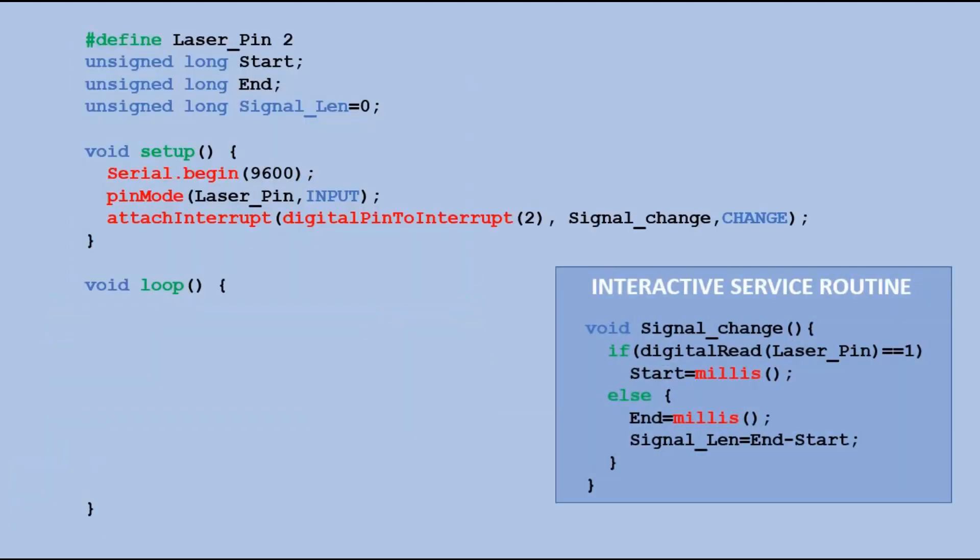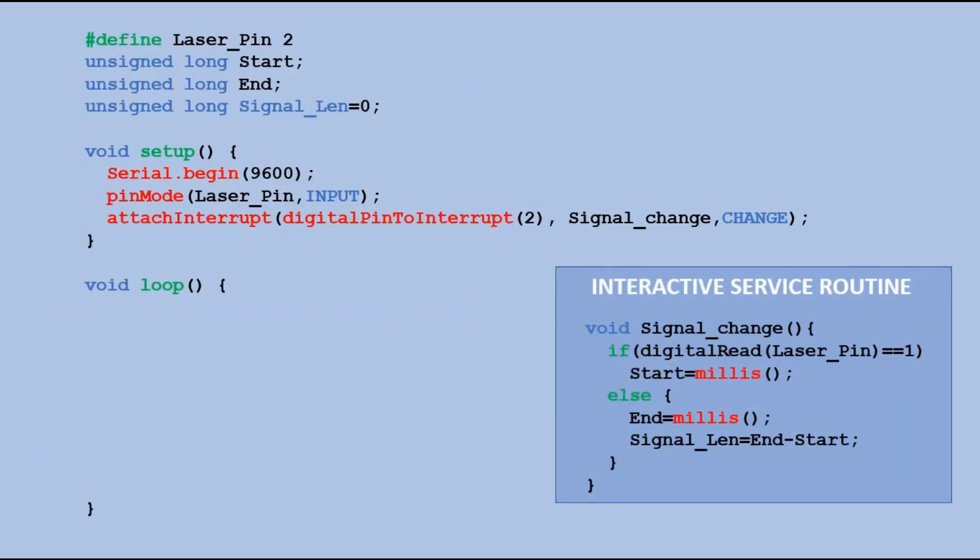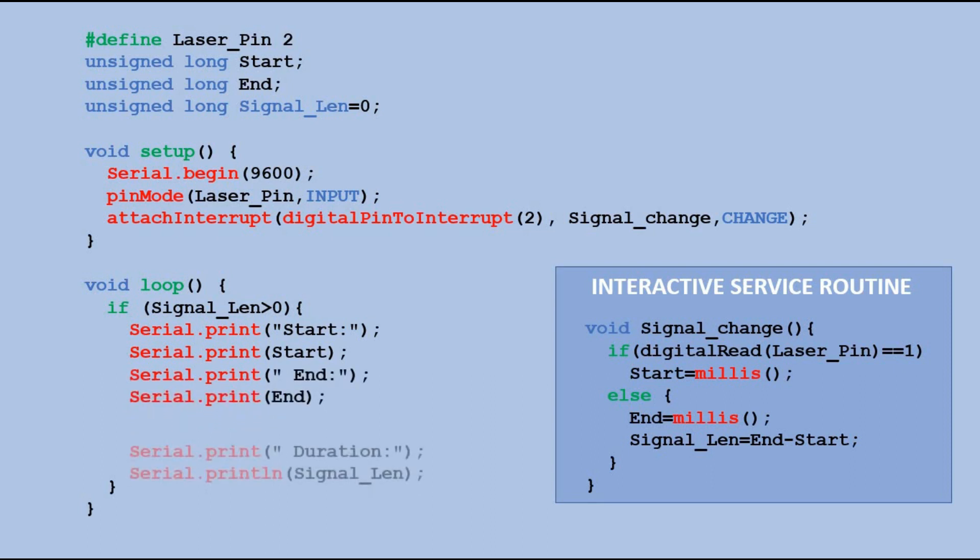Let's add the ISR to our code. The initial value of the signal len variable is zero. If the laser signal is detected and the ISR is processed for both start and end of the signal, signal len variable has a different value now. In loop function, we can detect such change and in this case, we can output to the serial monitor information about signal start, end and its duration. And when it is done, we reset the signal len variable back to zero, so it is ready for next incoming laser signals.